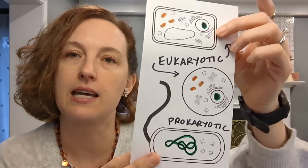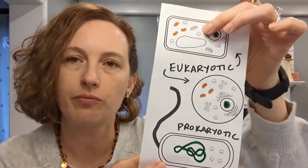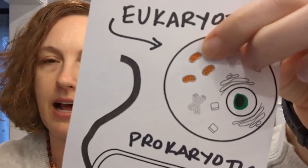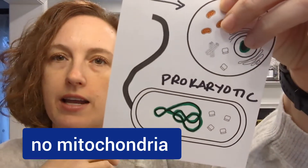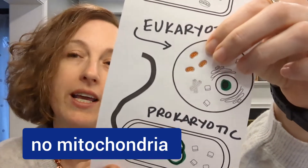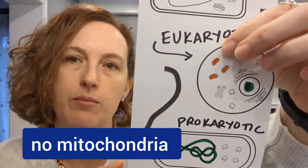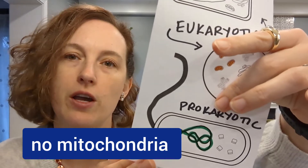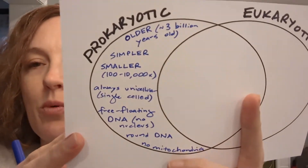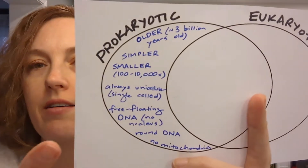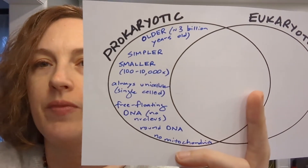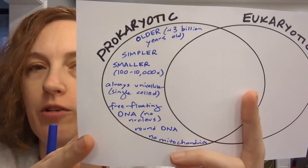The last unique thing about prokaryotic cells is they are lacking the things I've colored orange in the eukaryotic cells — those are called mitochondria. You should know that prokaryotes have no mitochondria. At this point you should have filled in the prokaryotic side of your Venn diagram with all the things we just went over, and next we're going to go to what makes eukaryotic cells unique.